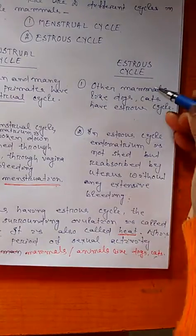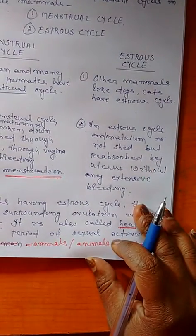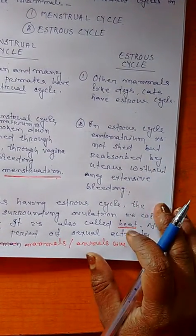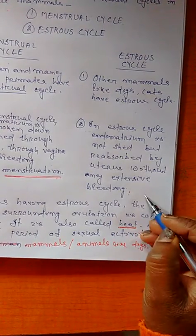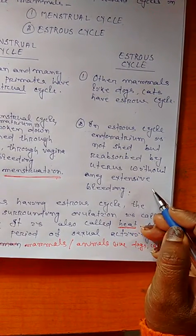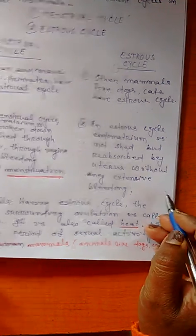The estrous cycle is also called the heat period because during this time, the body temperature of the animals is slightly higher than normal body temperature.